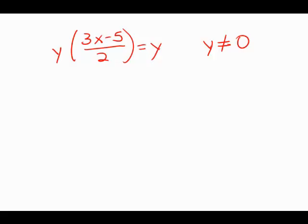If y times the quantity 3x minus 5 over 2 equals y, and y is not equal to 0, then x equals which of the following?